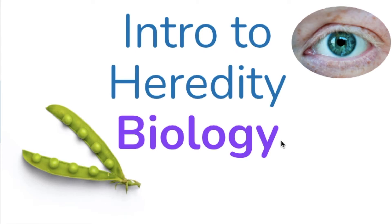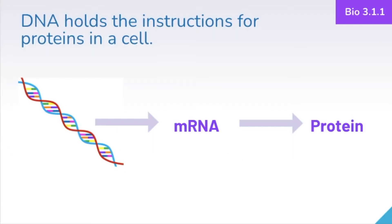Hey everyone, in this video we're going to be doing a brief introduction to heredity for introductory biology students in high school. This is meant as just an introduction, so if you need a deeper view of any of these topics feel free to look for other videos on my channel. DNA holds the instructions for proteins in a cell, and proteins determine our traits and physical characteristics from the cellular level all the way up to the entire organismal level. The topic of heredity encompasses how traits are passed from one organism to another.